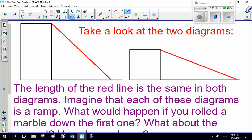Take a look at these two diagrams. The length of the red line is the same in both diagrams. Imagine that each of these diagrams is a ramp. What would happen if you rolled a marble down the first one? What about the second? How do you know?